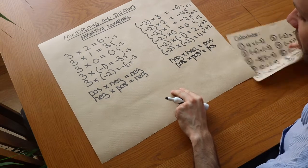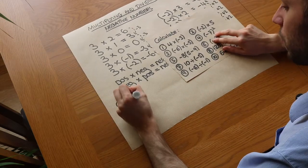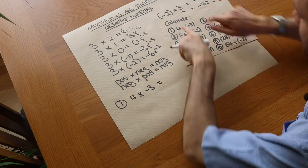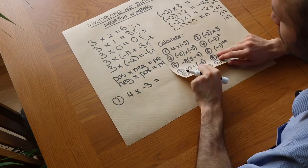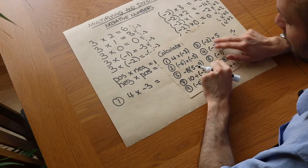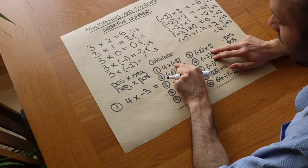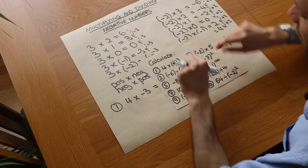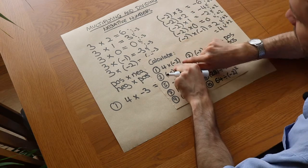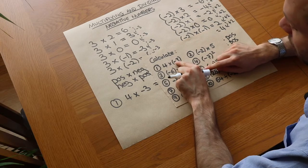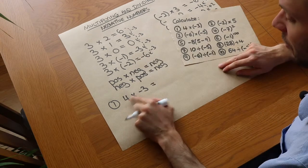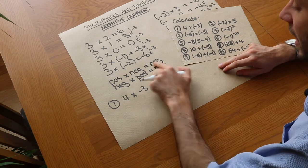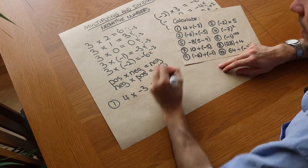Let's do some examples. Firstly, 4 times minus 3. You don't actually need to include those brackets — it's just so you don't mix up negation with subtraction. When you have that minus there, that means minus 3, not a subtraction of 3. Sometimes we put brackets around the negative number to show that it's negation rather than subtraction. So first we do 4 times 3, which is 12, but positive times negative is negative, so it's minus 12.